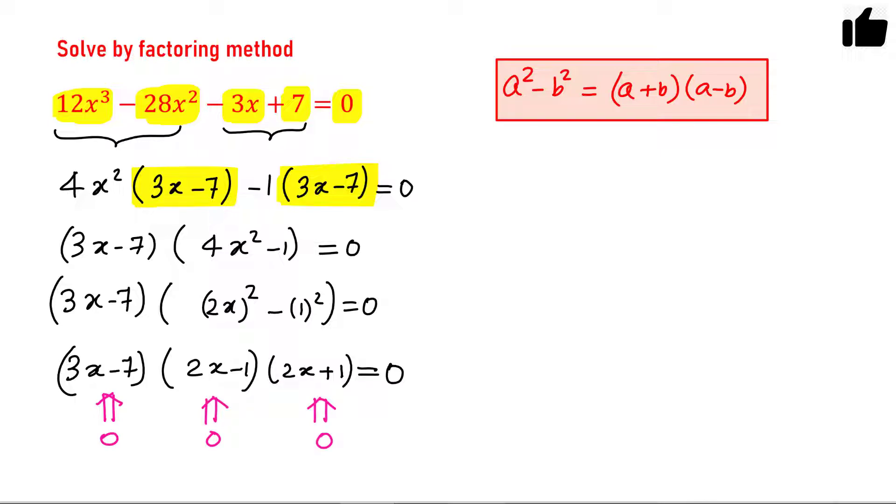So 3 cases you can consider one by one. If 3x - 7 equals 0, this means x equals 7/3. Second case, if 2x - 1 equals 0, this means x equals 1/2. And the third case, if 2x + 1 equals 0, this means x equals -1/2.